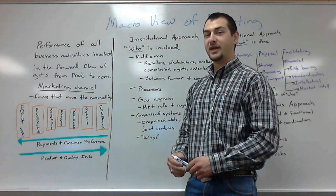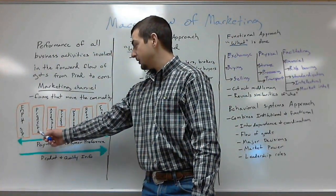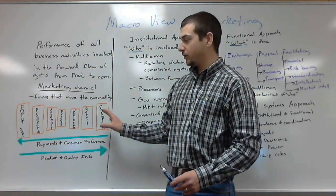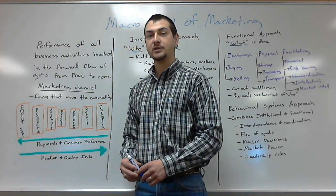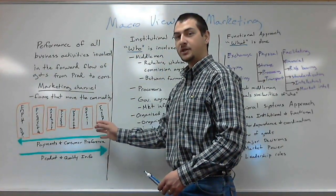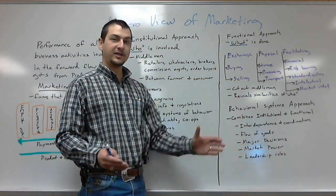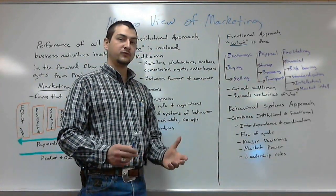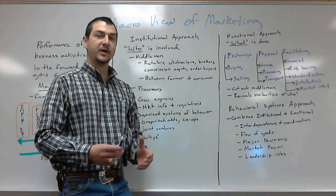For example, producers need the processors to sell to individual retailers to reach consumers. We are tied into those processors just as much as the processors are tied into individual farmers and ranchers. Those retailers are tied into the processors, and consumers are tied into the retailers — it all just kind of flows. We are very dependent on the individual aspects of the marketing channel, showing the interdependence and coordination among those different aspects.